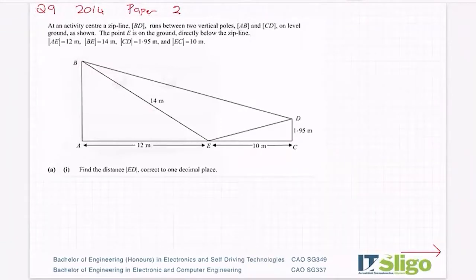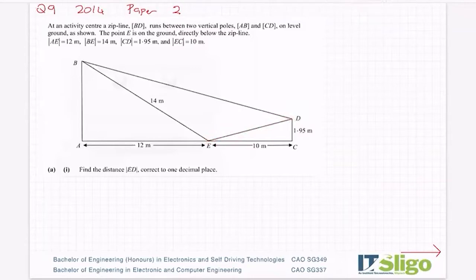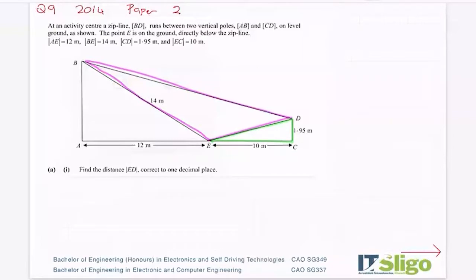Find the distance ED correct to one decimal place. I'm going to highlight that long line. You have two options for that line — I could take that triangle using that line, or I could take that triangle. Both of them contain the line ED, which is what I'm asked for, so in theory I could use either one to find ED.